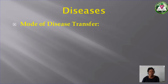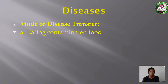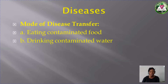What are the modes of disease transfer? How can these diseases be transferred? One, by eating contaminated food — when someone eats food contaminated maybe by houseflies and you eat it, it can lead to things like dysentery. The second one, drinking contaminated water — water that is dirty or not pure. When you drink it, it can lead to disease.